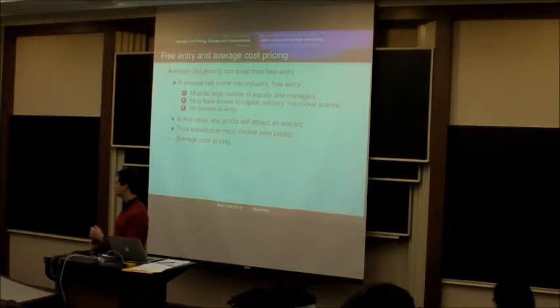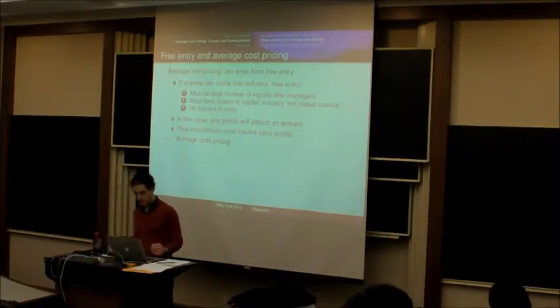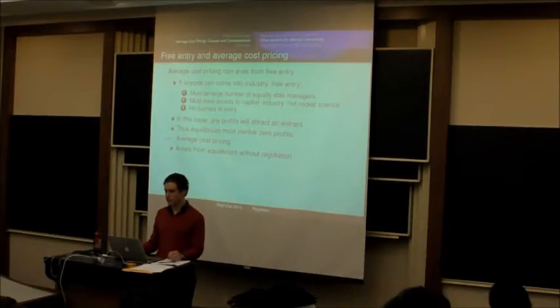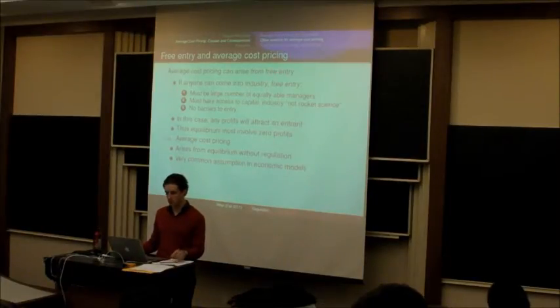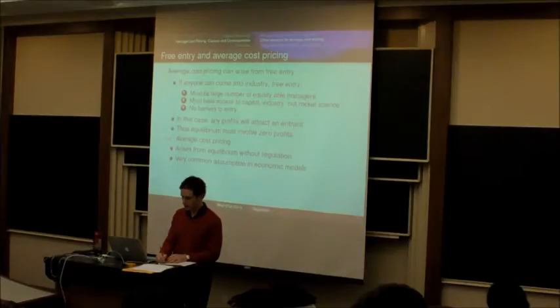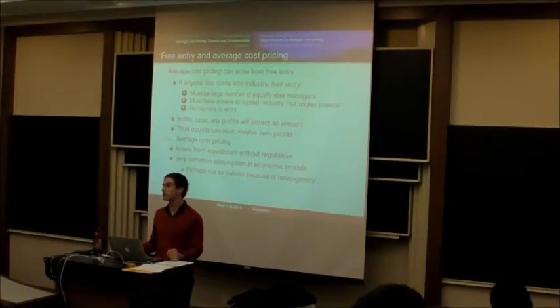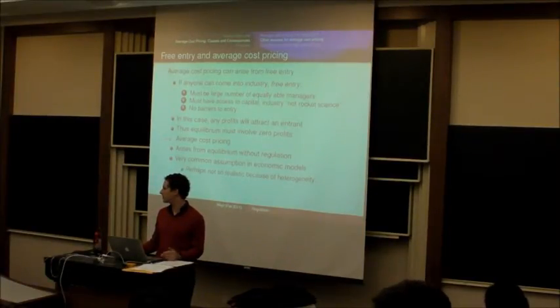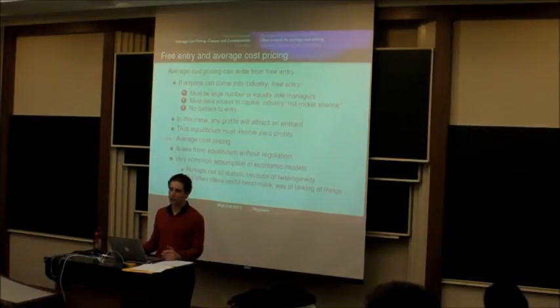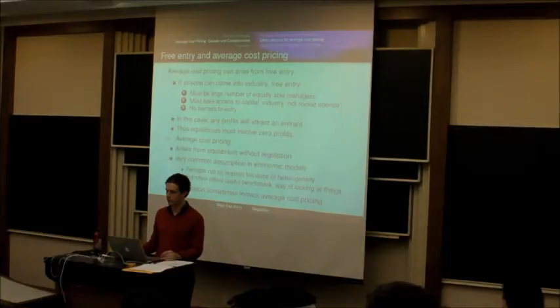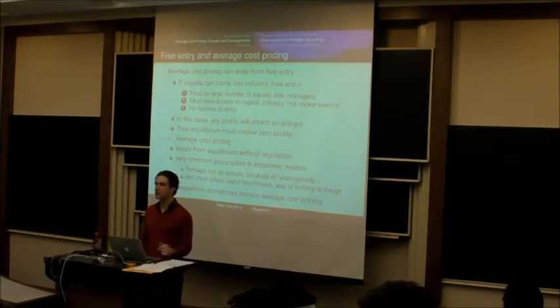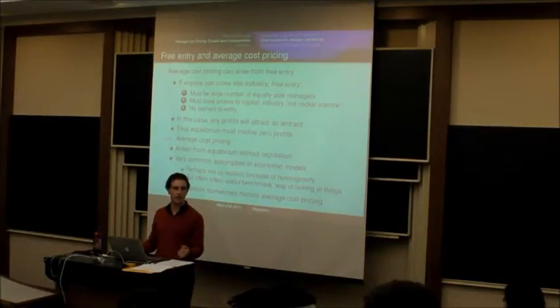We can think of average cost pricing either as a government method of regulation, or as something that naturally comes out of the market process. In this case, would there still be a small amount of profit as payment to the investors for their capital? Yeah, it would be similar to rate of return regulation. This arises in equilibrium without regulation, and in fact this is a very common assumption in a wide range of economic models. There's lots of reasons to think it's pretty realistic, unrealistic because of some of these heterogeneity issues that I emphasized a lot in lecture five, but it often offers a useful benchmarking way of looking at things. In many cases, competition to get into an industry can mimic average cost pricing.